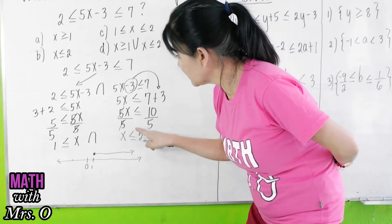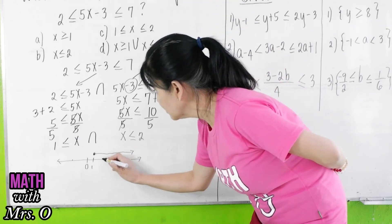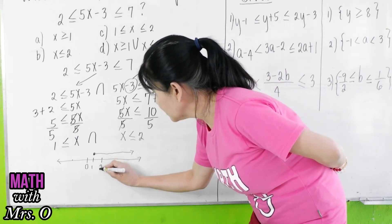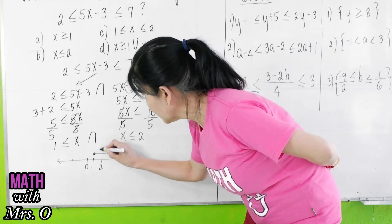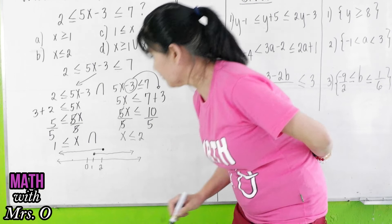Also, graph x is less than or equal to 2. So, if this is 2, less than or equal to 2 will be from 2 and all the numbers going to the left.